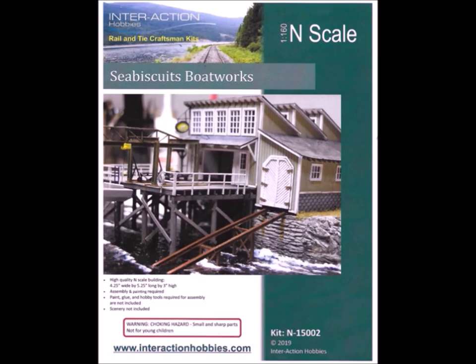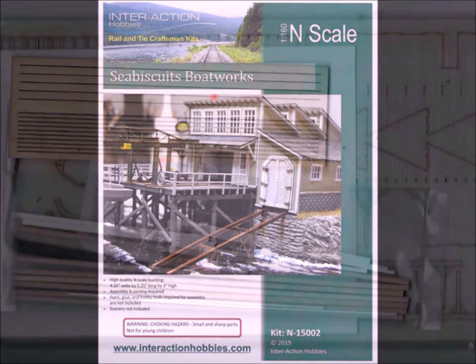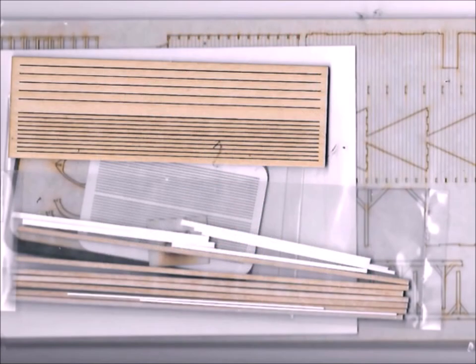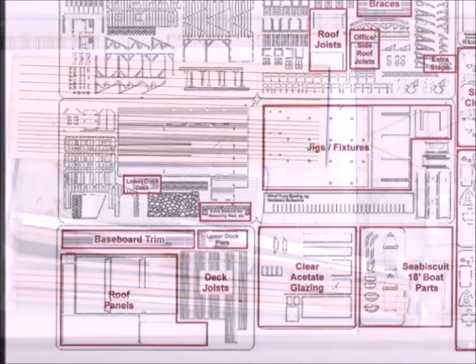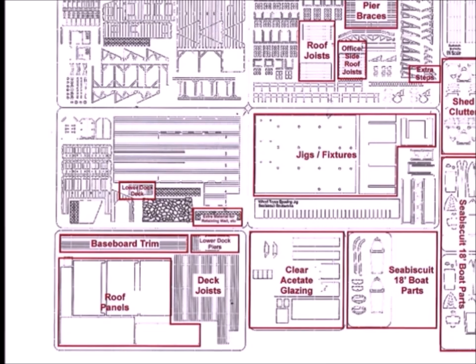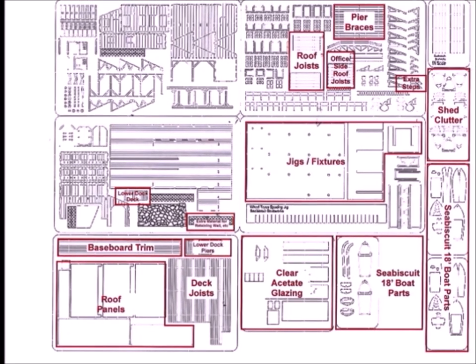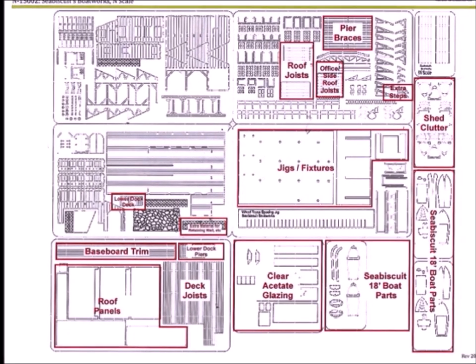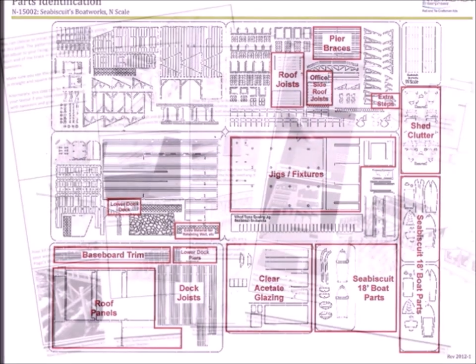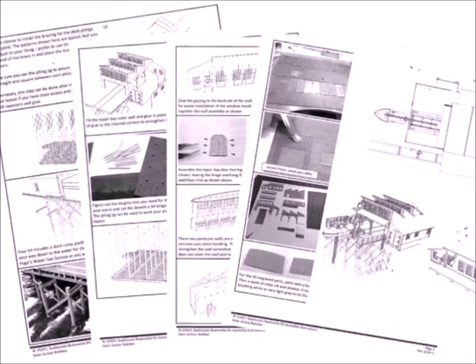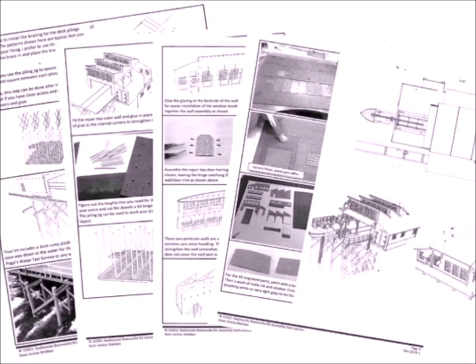It's called Sea Biscuit's Boatworks in HO scale. Of course, as I always do, as soon as the kit got here I took it apart and had a look at it. They have very specific information on where the parts are to be found on this parts register. There's a veritable book of directions with this.